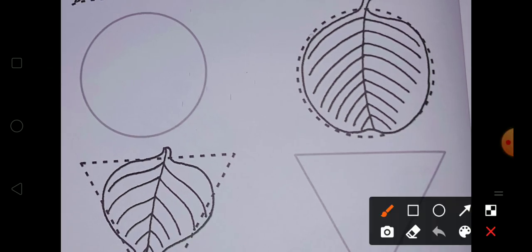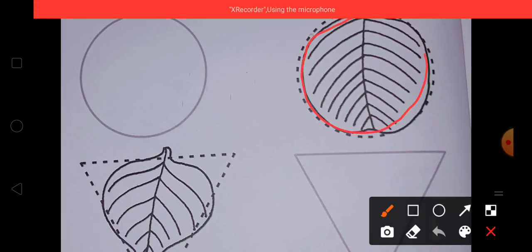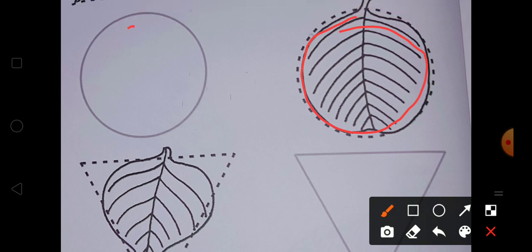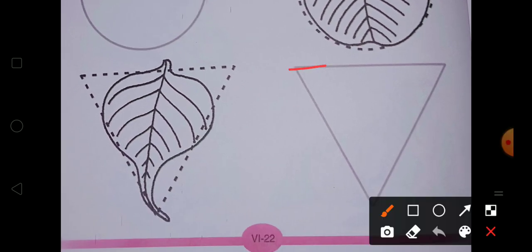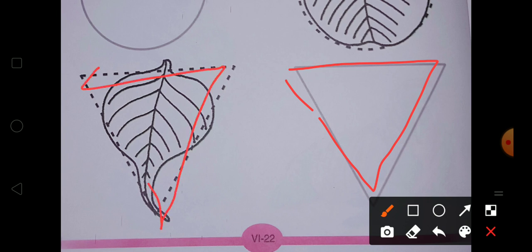This is a circle shape. So you have to create leaf in this. This leaf is a triangular shape. You can see this leaf in a triangular shape.